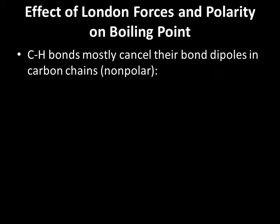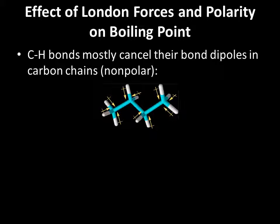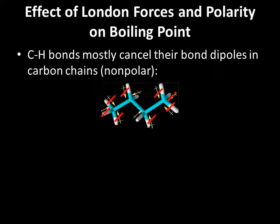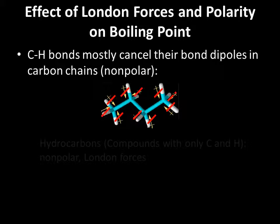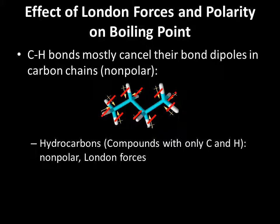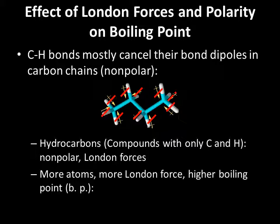CH bonds mostly cancel their bond dipoles in carbon chains, making the carbon chain nonpolar, because of the zig-zag arrangement of the carbon-carbon framework. If you look at butane, the CH bonds are going to be pointing in equal and opposite directions, causing the bond dipoles to cancel out. Butane is an example of a hydrocarbon — compounds with only C's and H's. All hydrocarbons are nonpolar, possessing only London forces. On the left we have pentane, with a boiling point of 36 degrees Celsius.